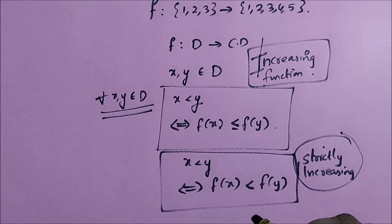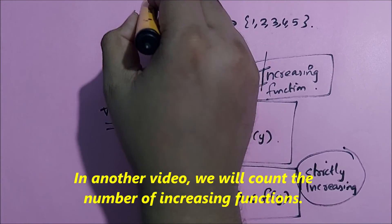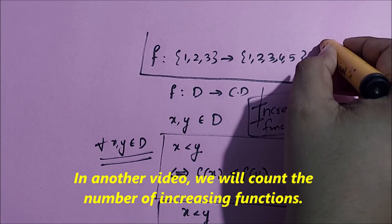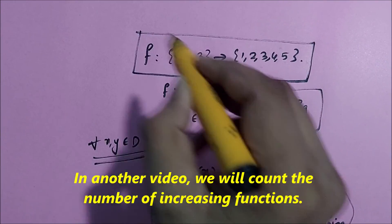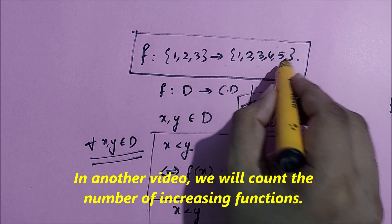Now what we are going to do is count the number of increasing functions from {1, 2, 3} to {1, 2, 3, 4, 5}.